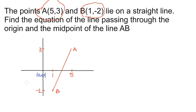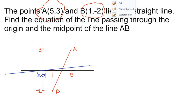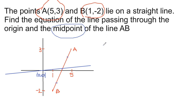The other statement mentions the midpoint of the line AB. Midpoint means the point is at the center of the line AB. So the statement we should follow is that the line should pass through the origin (0, 0) and the midpoint of AB.